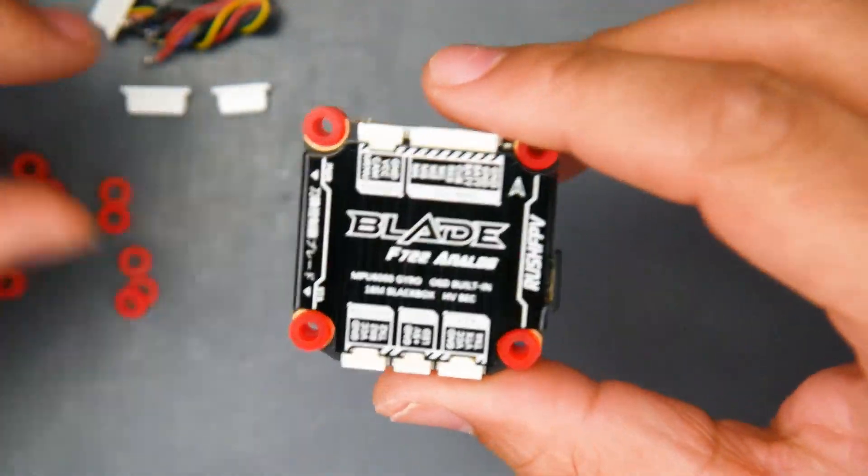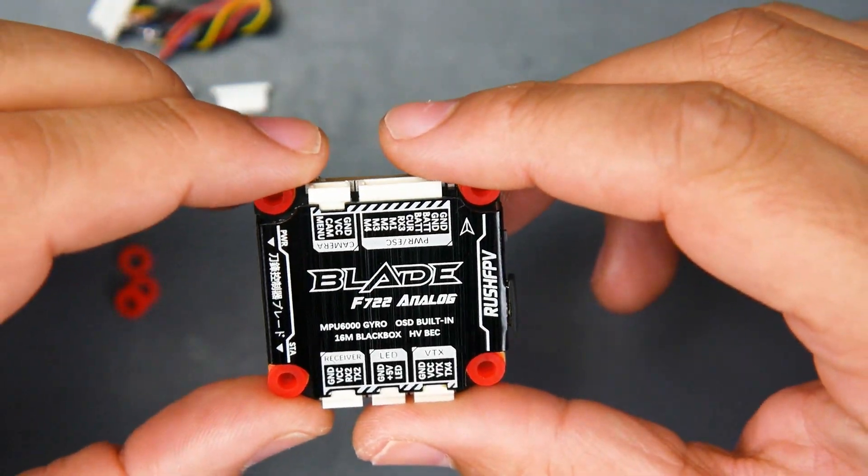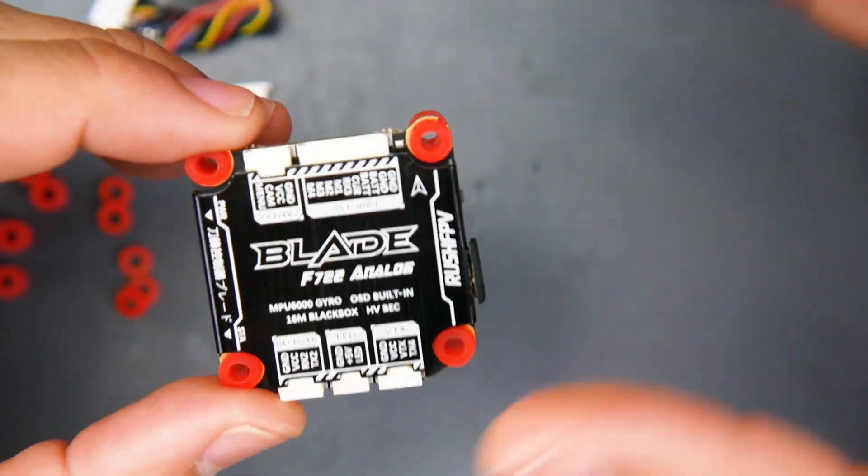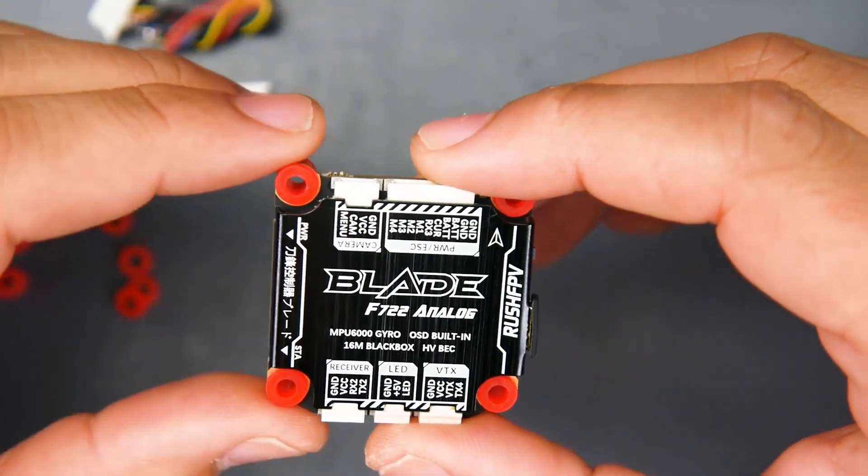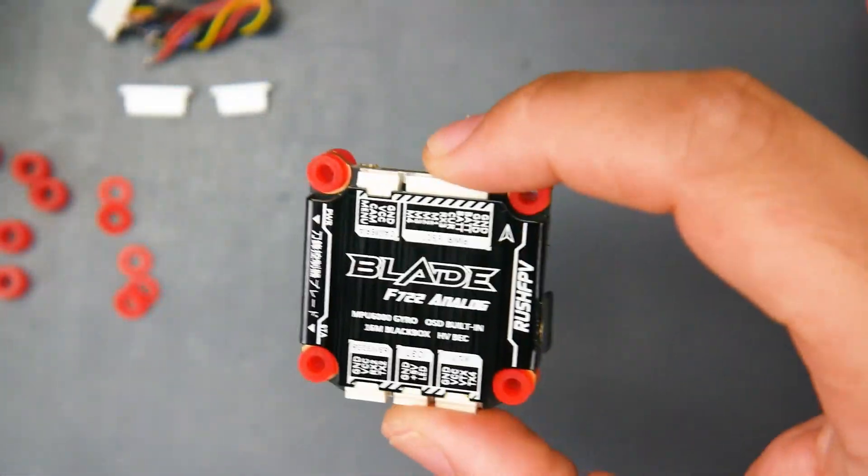This is an F7 flight controller. Unfortunately, there is no 9 volt or 10 volt regulator. So you will be getting battery voltage down to your video transmitter. Make sure you keep that in mind.